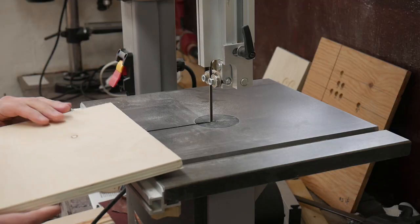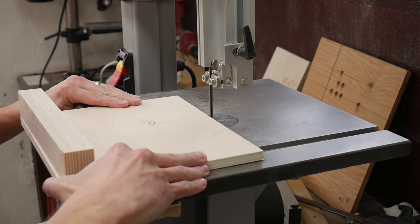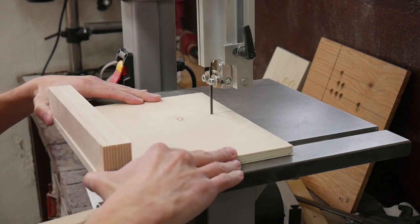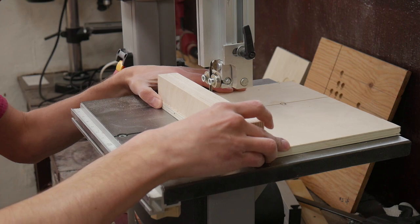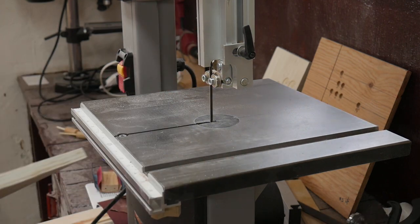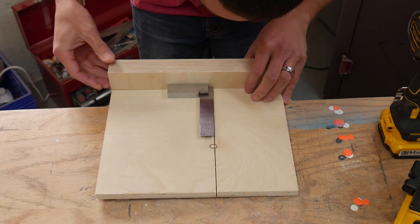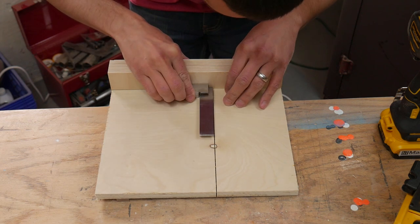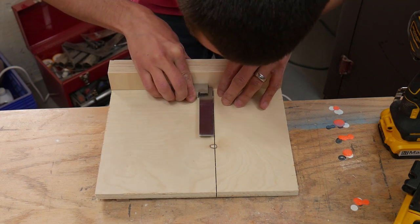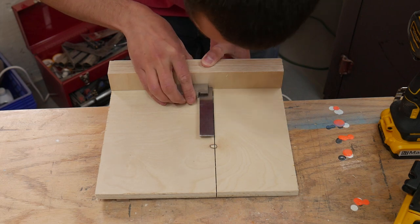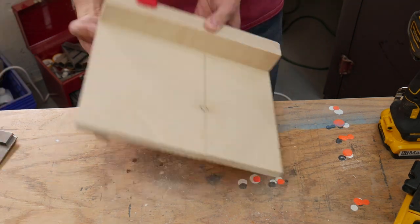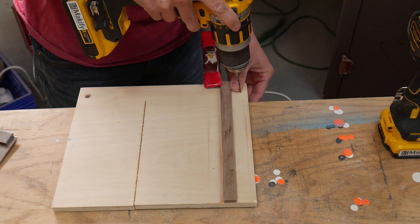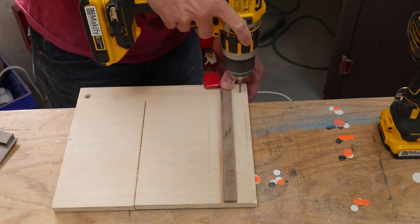I put the sled on the band saw and cut almost all the way to the double piece of plywood. I used a square to make the double strip of plywood perfectly perpendicular to the cut line. Then clamped it and drove in another screw at the other end to hold it in place.